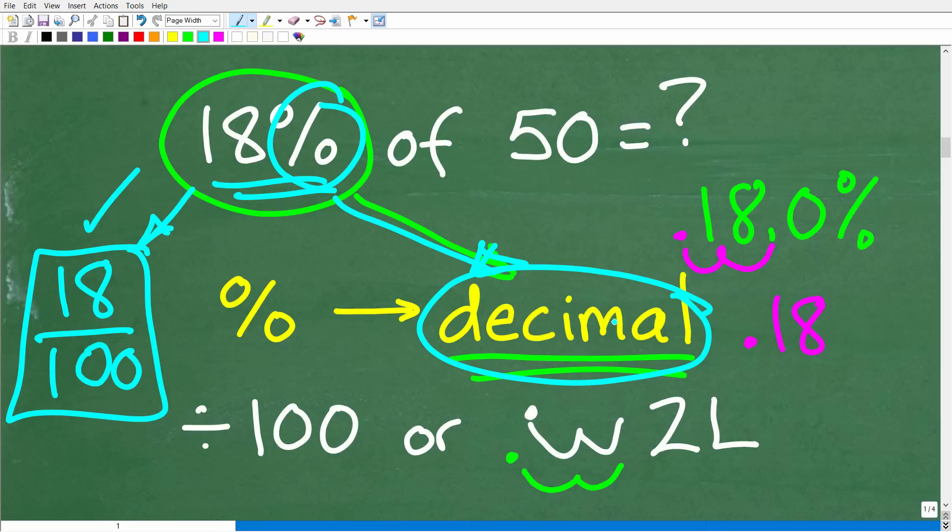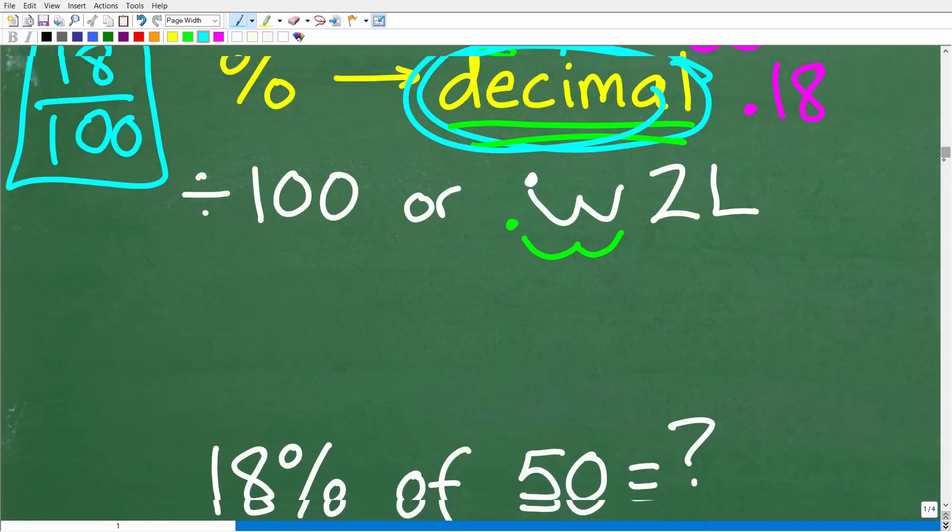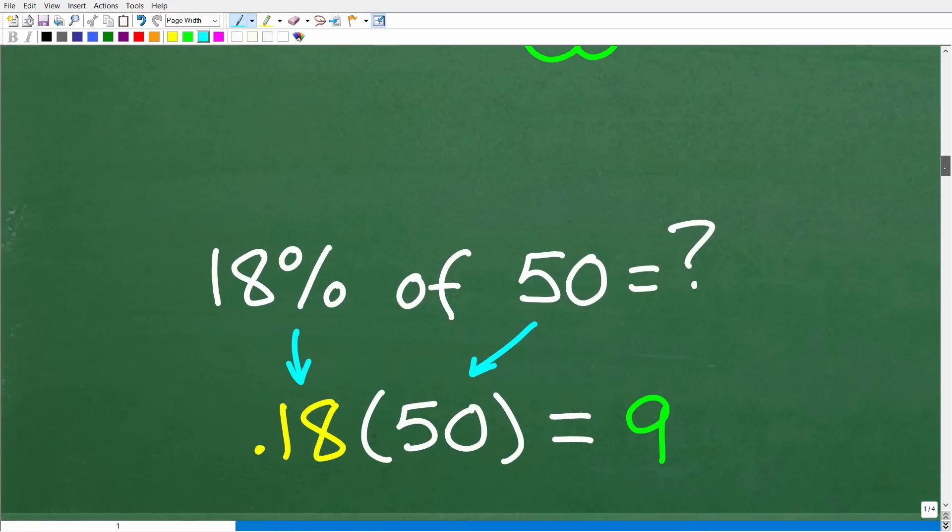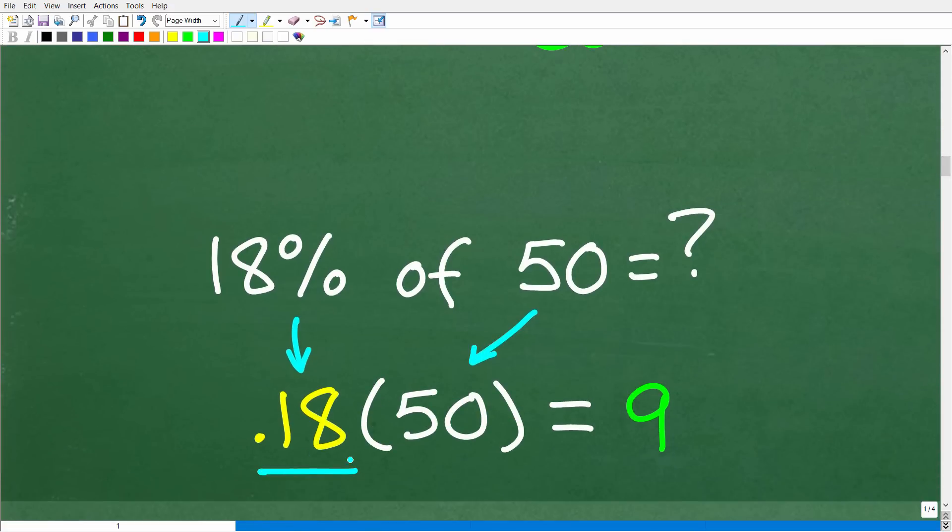So that is step one. So what you're going to do is change your percent into a decimal, and then you're simply going to multiply by the number to get your answer. Alright, so here is how that looks. 18% is the same thing as 0.18, and then we're just going to multiply by 50. So 0.18 times 50 is 9.